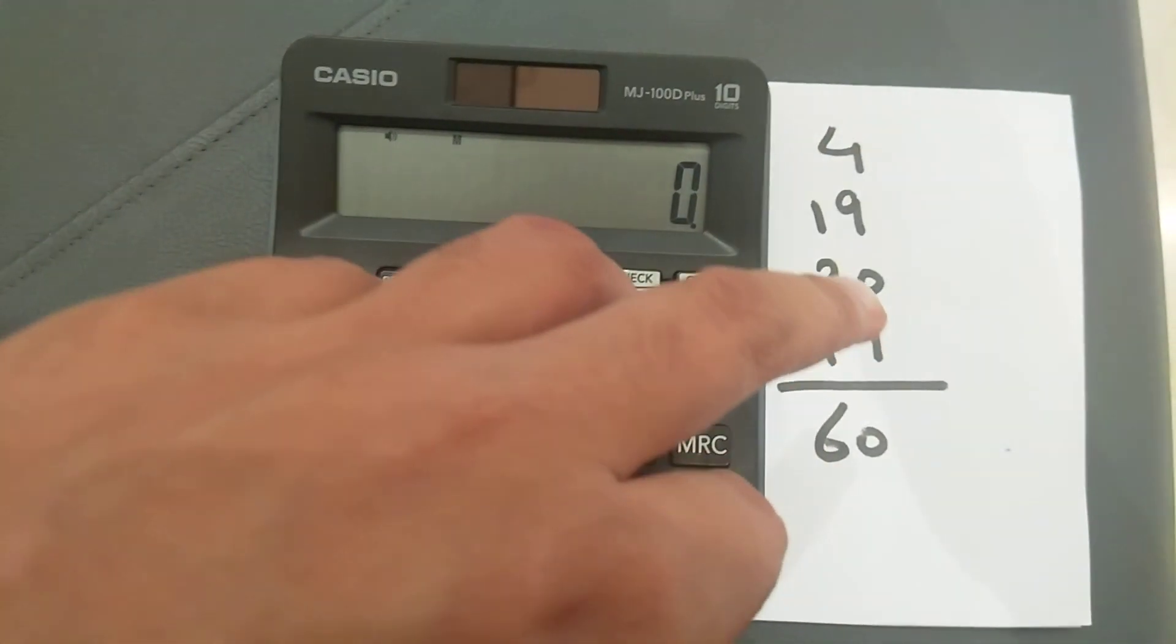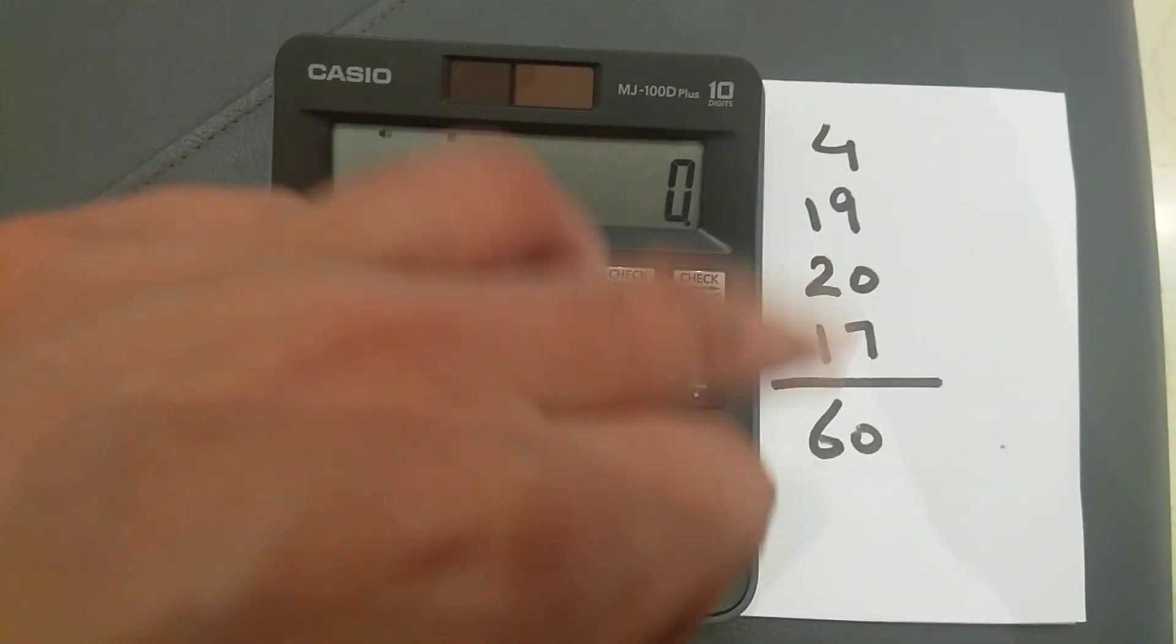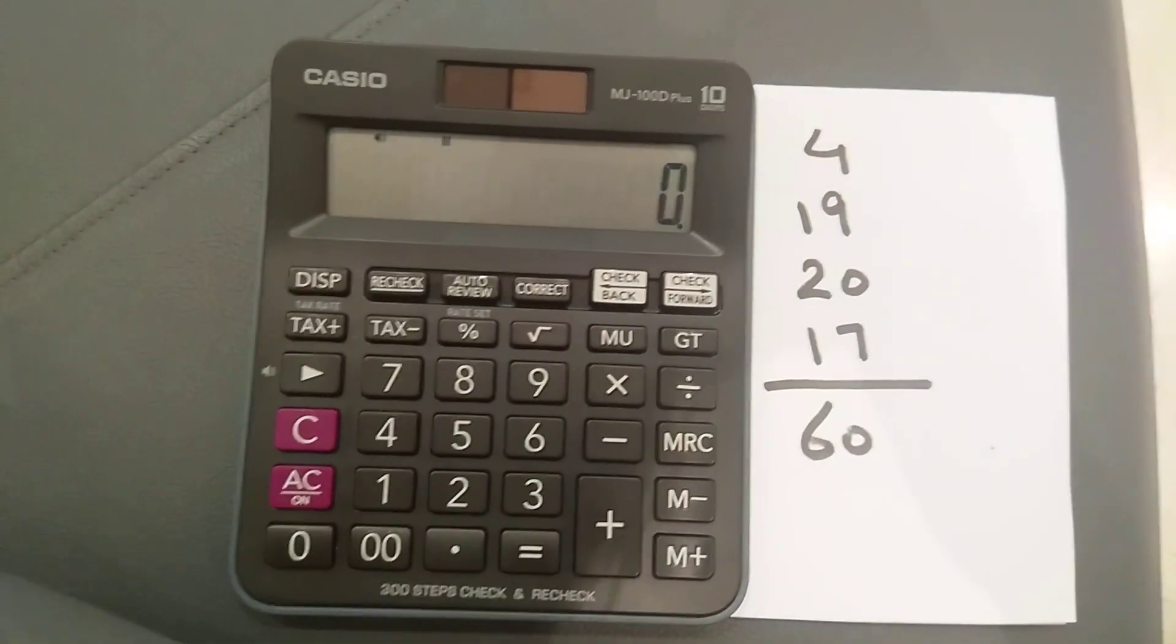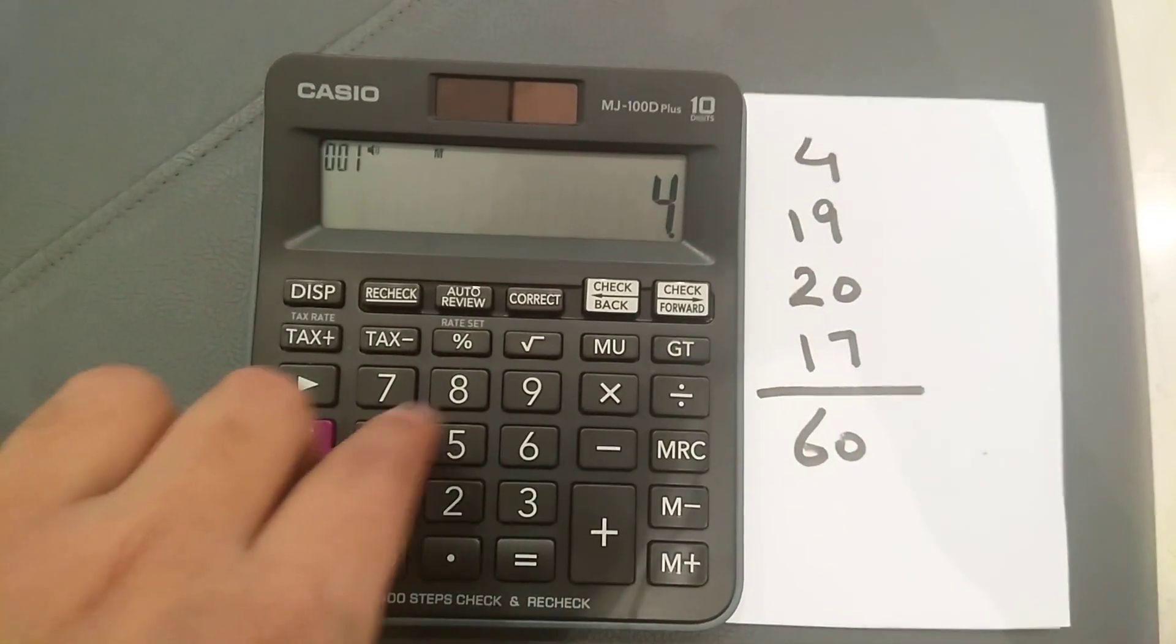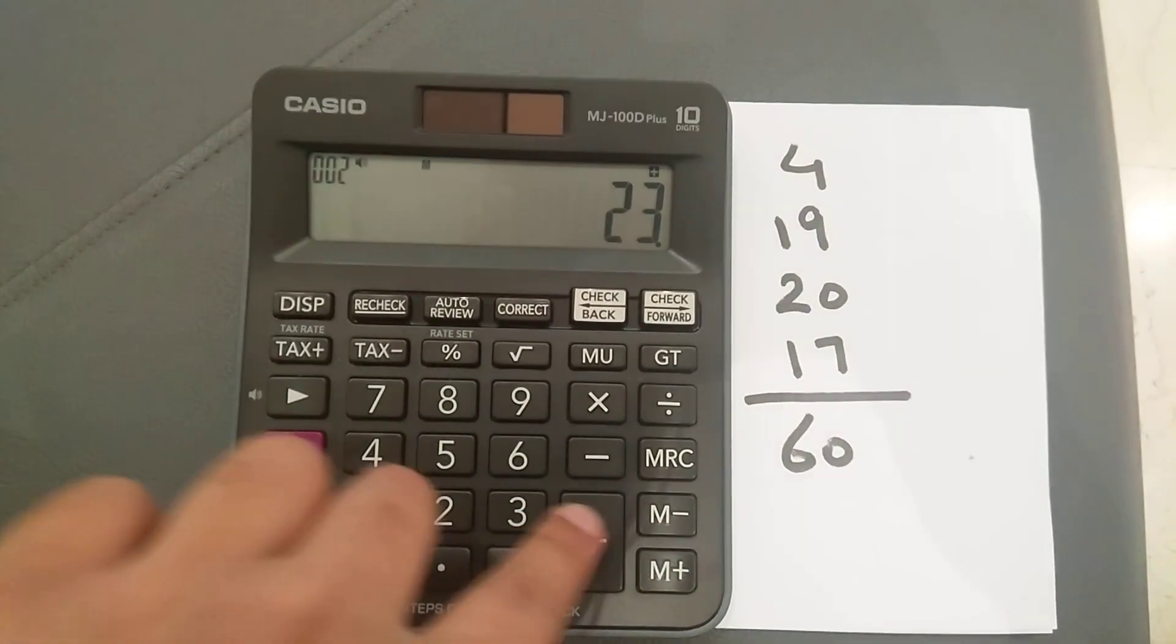I just made an example here. These are four numbers. I will add them and show you how you can do this with the recheck button. For example, I will add 4 plus 19 plus 20 plus 17.